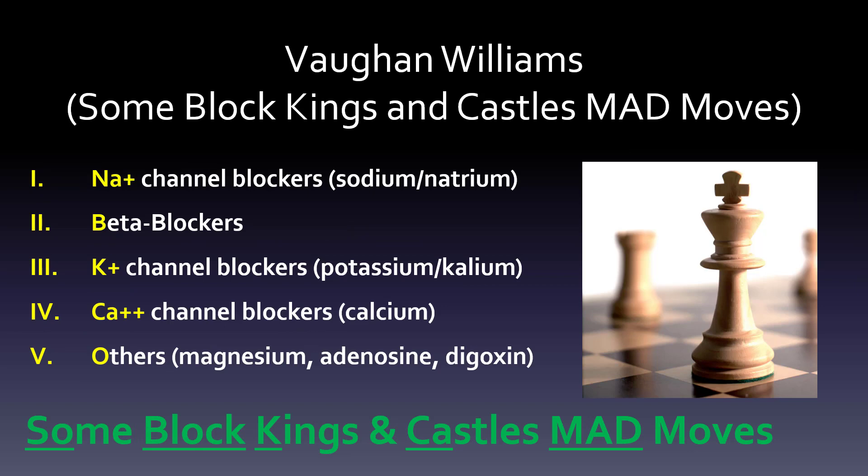Another way is to make a sentence: 'Sum block kings and castles with MAD moves.' So 'sum' is for sodium (NA+), 'block' is for beta blockers, K from 'kings' is for potassium, CA from 'castles' is for calcium channel blockers, and MAD moves — the MAD — represents magnesium, adenosine, and digoxin. I've got a little picture here of a king and a castle in chess as a visual reminder. So two different ways to remember those.